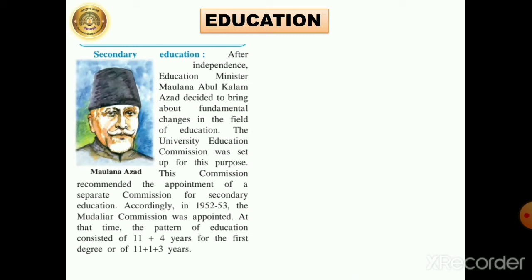Accordingly, in 1952–53, the Mudliar Commission was appointed. At that time, the pattern of education consisted of 11 plus 4 years for the first degree, or 11 plus 1 plus 3 years. That means 11 standards, then after that 4 years, and then they used to get the degree certificate.